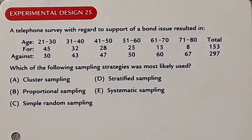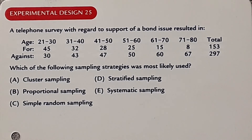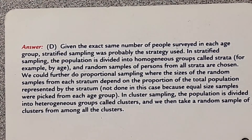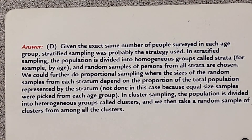A telephone survey regarding support of a bond issue resulted in data broken down by age group. The question asks which sampling strategy was most likely used. The answer is stratified sampling — given the exact number of people surveyed in each age group, stratified sampling was probably used. In stratified sampling, the population is divided into homogeneous groups called strata; in this example, the strata were age groups.